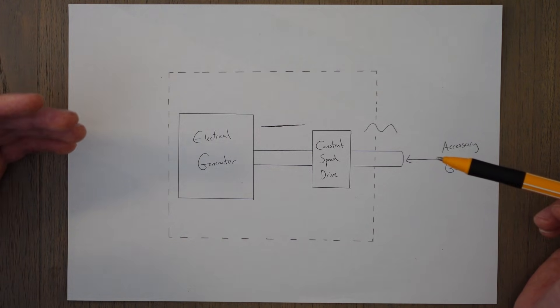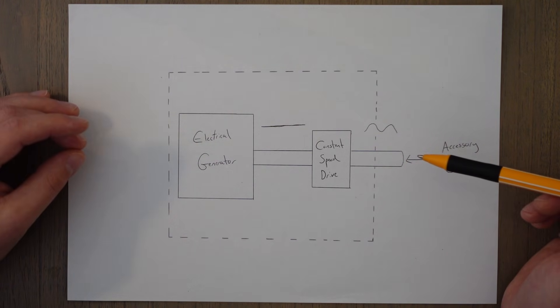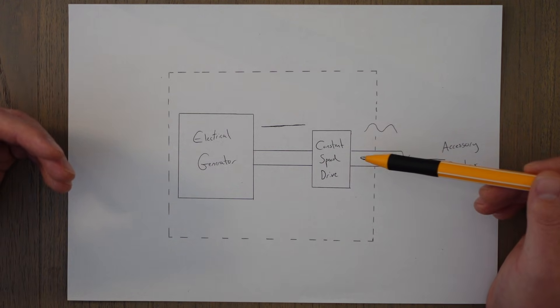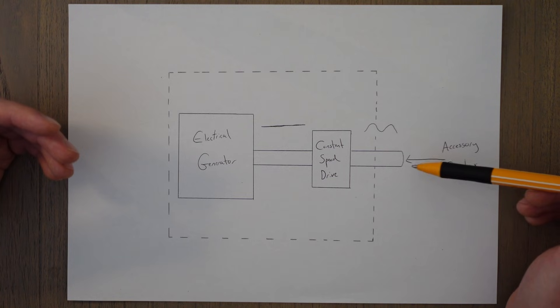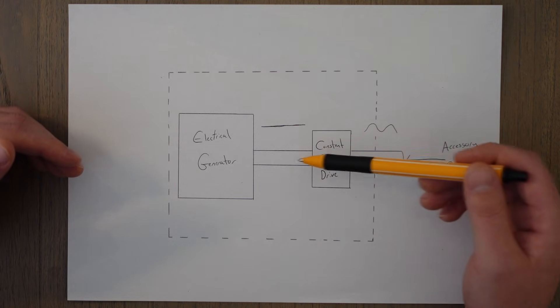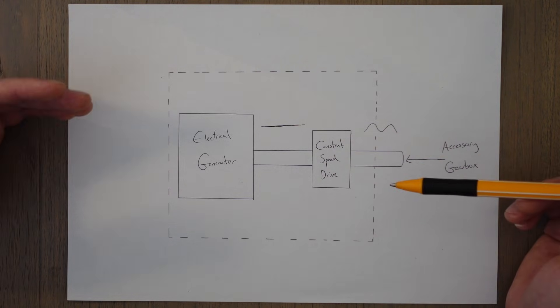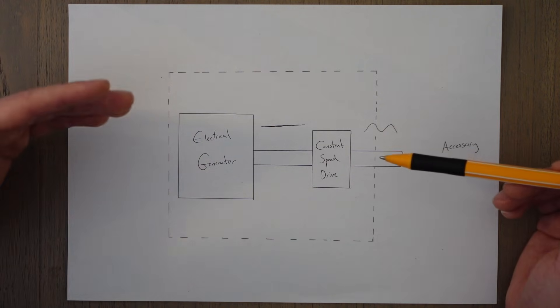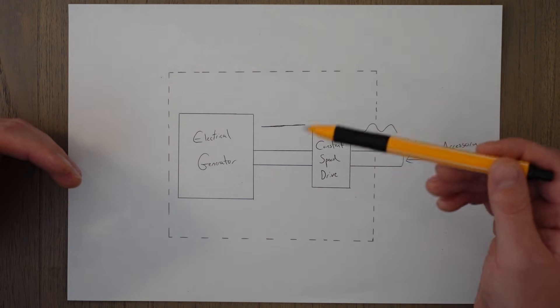This isn't good—we want a constant frequency for the electricity in the aircraft. So the constant speed drive alters and takes the input rotation from the engine and alters the output torque to achieve a constant output rotation. It's kind of like applying the brakes to slow down the rotation or letting the engine freewheel in order to achieve a constant output.